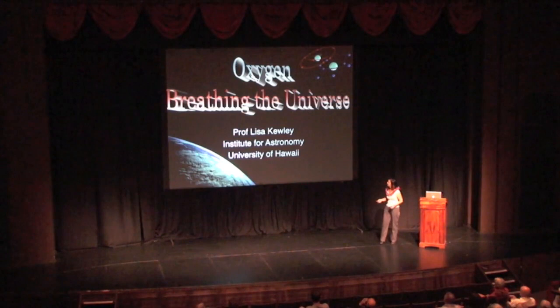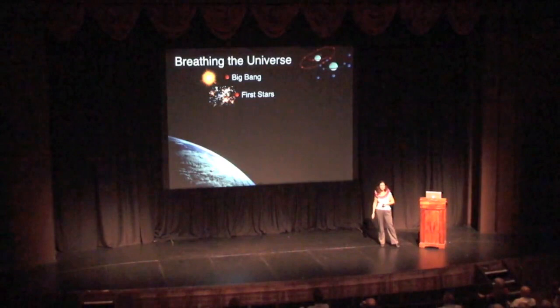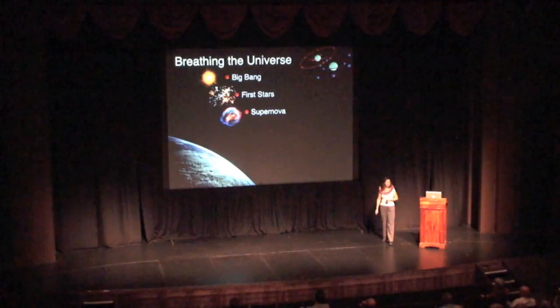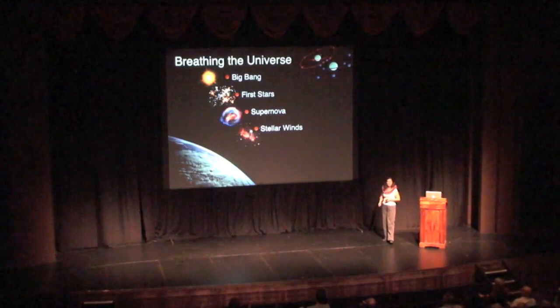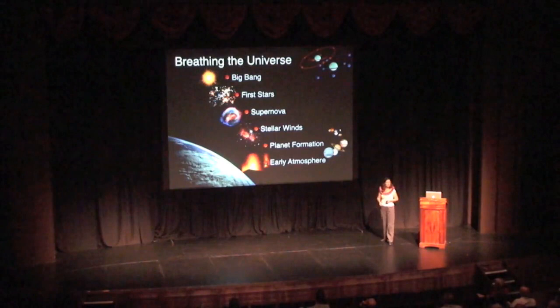We're going to start the journey of oxygen in the very early days of the universe at the Big Bang, then follow the birth of oxygen right inside the centres of the first stars. We're going to move through oxygen's journey being blown out of stars into supernova and then blown out of stars also in massive stellar winds. Finally, oxygen ends up in planets forming around young hot stars and ends up in the early atmospheres of planets like Earth. And then finally I'll talk about the oxygen that you're breathing right now.